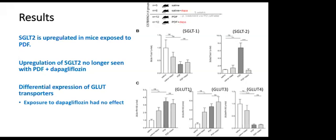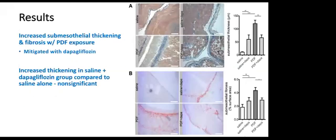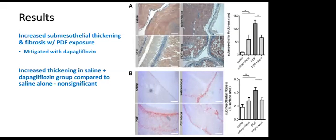You wouldn't expect an SGLT inhibitor to necessarily affect GLUT transporters. Regarding structural and functional changes: after five weeks of exposure to PD fluid or saline, histologic examination showed an increase in submesothelial thickness in the PD fluid group compared to the saline group, and compared to the PD fluid plus dapagliflozin group. PD fluid exposure leads to increased thickness and fibrosis. Adding dapagliflozin appears to decrease thickness and fibrosis.